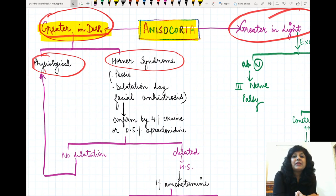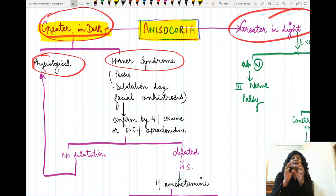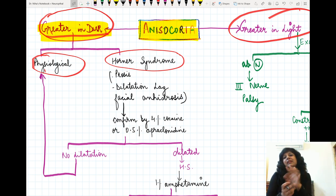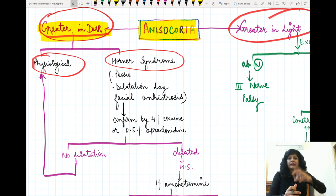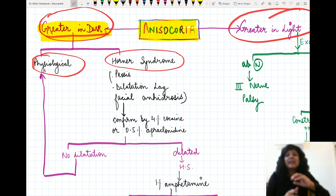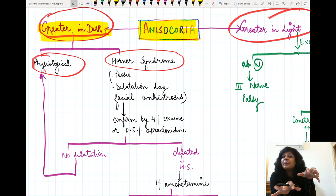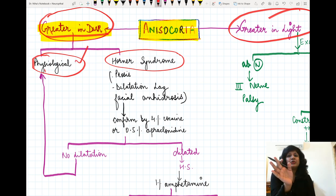Physiological anisocoria in the dark occurs because the reticular activating system has an inhibitory influence over the Edinger-Westphal nucleus, and this inhibition may be asymmetrical — inhibiting one eye more than the other. That leads to asymmetric pupil sizes, producing physiological anisocoria.